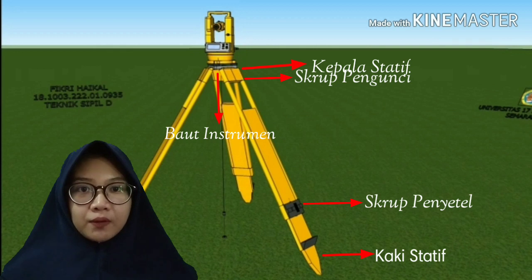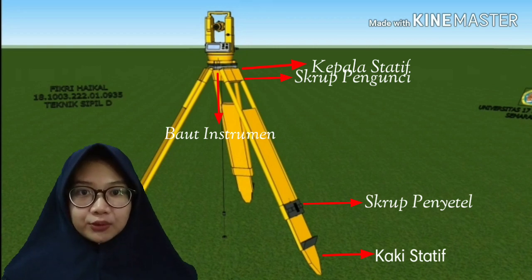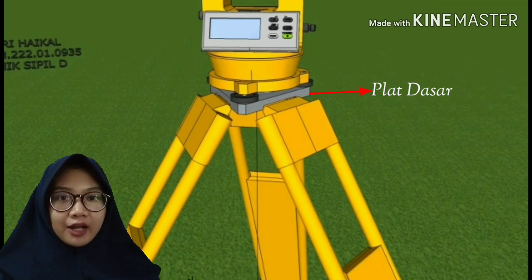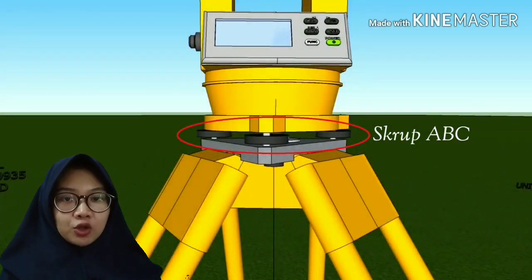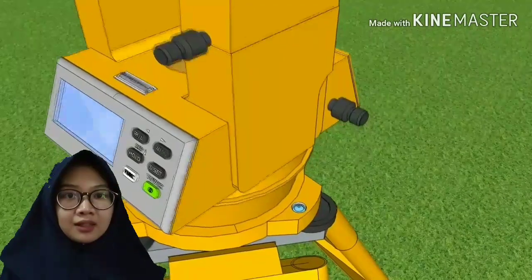Baut instrumen berfungsi untuk mengencangkan antara pesawat teodolit dengan statif. Kaki statif berfungsi untuk menancap ke tanah dengan kuat agar pesawat tidak jatuh. Selanjutnya adalah plat dasar. Plat dasar berfungsi sebagai tempat tertumpunya pesawat teodolit. Kemudian ada skrup ABC. Skrup ABC ini berfungsi untuk mengatur atau menyeimbangkan nifo kotak dan nifo tabung agar sumbu satu vertikal.